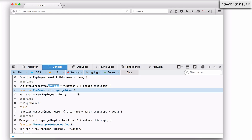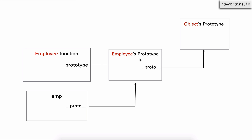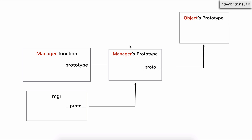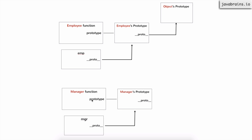Here's the picture — this is what's happening right now. We have the employee function which has the prototype, and I have a getName property on the employee's prototype, which is how all employees created by using new employee are going to have getName. Then we also have the manager function, and we have the manager's prototype which has a getDepartment. And even this has a dunder proto which points to the object's prototype. So both these sets of objects — the employee function, employee's prototype pointing to the object prototype, and the manager function and the manager's prototype also pointing to the object's prototype — mean that whatever is on employee is not accessible by manager.